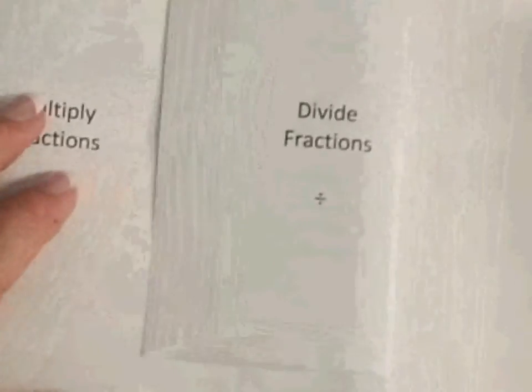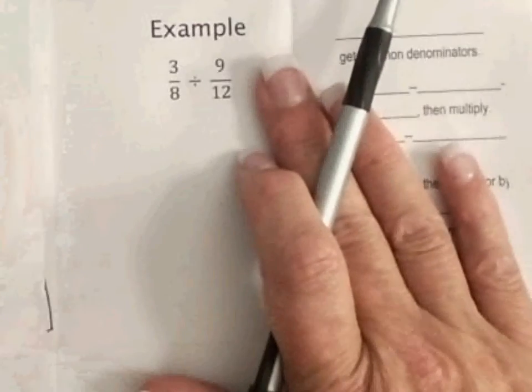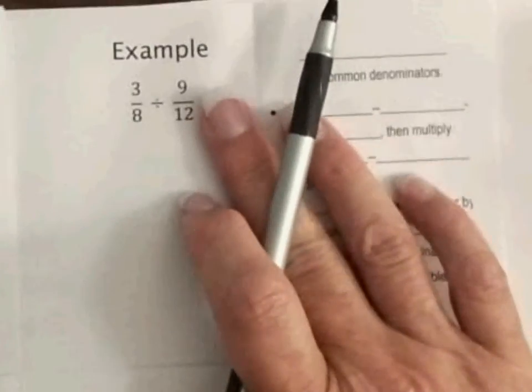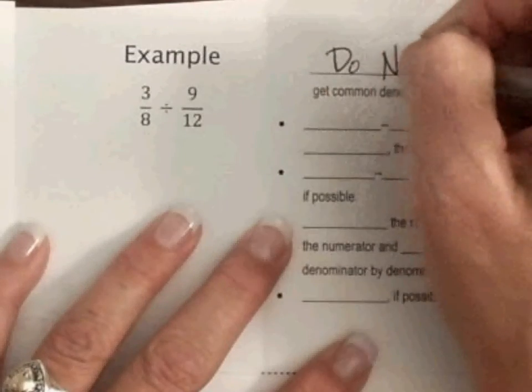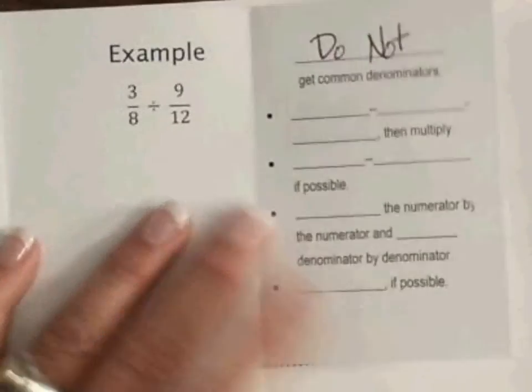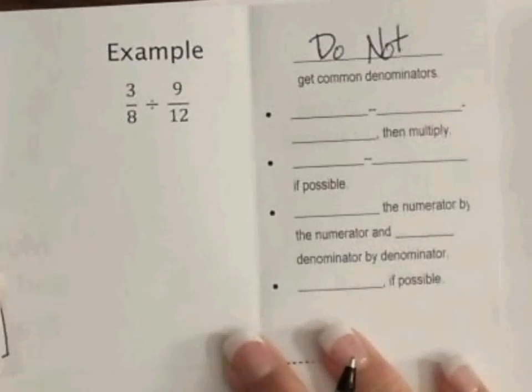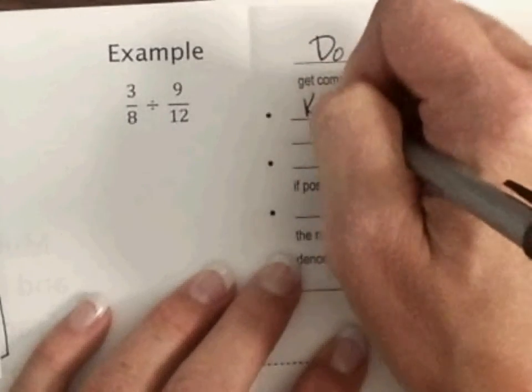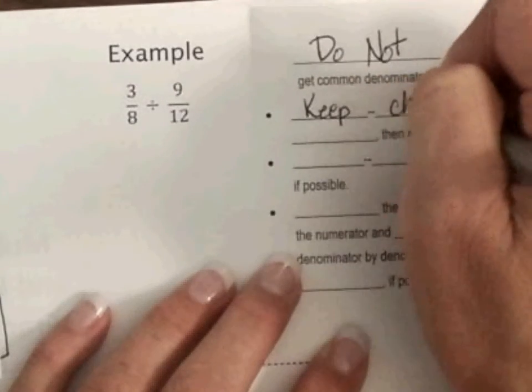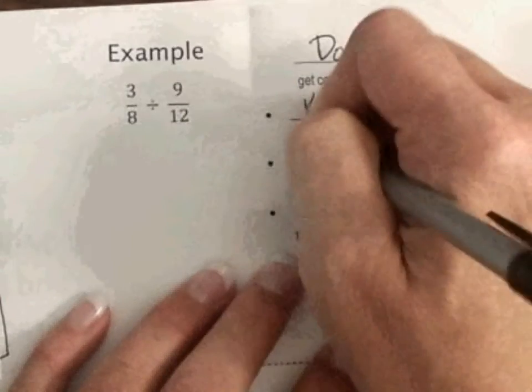Okay. Let's do dividing. We're dividing our fractions. So, again, we do not need common denominators. So, we're going to keep, change, flip. So, keep, change, flip.